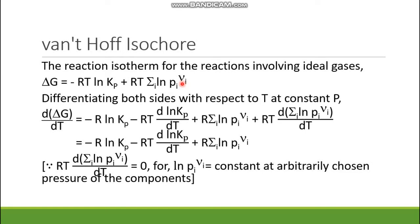If we differentiate this equation on both sides with respect to temperature at constant pressure, then on the left-hand side we shall get d/dT of ΔG. On the right-hand side, we have to differentiate this twice — keeping ln Kp constant and differentiating T, then keeping T constant and differentiating ln Kp. R is always constant so it remains as the coefficient. If we take ln Kp constant, the differentiation of T with respect to T is 1, giving -R ln Kp. Next, with T constant, the variable is ln Kp, so the differentiation gives d/dT of ln Kp.